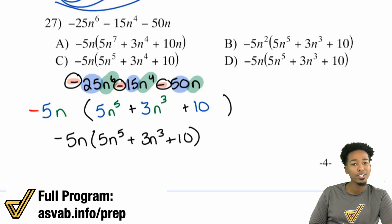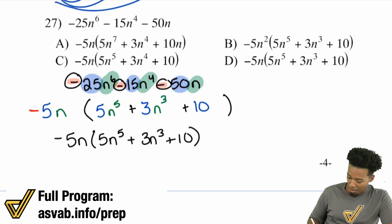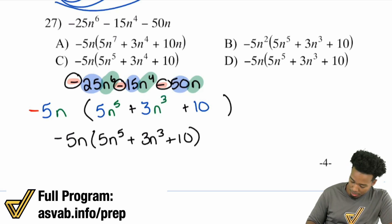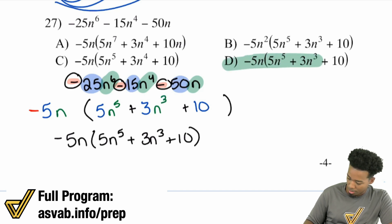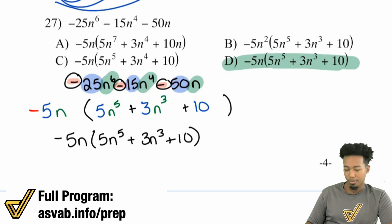So our final answer can be written as negative 5n multiplied by 5n to the power of 5, plus 3n cubed, plus 10. And there it is.